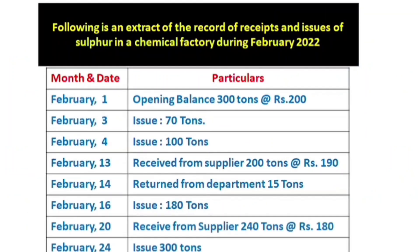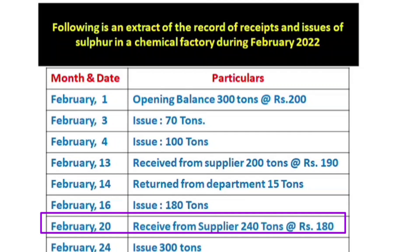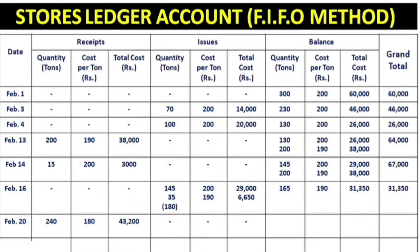After the February 16 issue, the remaining balance is 165 tons at 190 rupees, totalling 31,350. On February 20, we received from the supplier 240 tons at 180 rupees each, totalling 43,200. The new balance has two layers: 165 tons at 190 rupees (31,350) and 240 tons at 180 rupees (43,200), grand total 74,550.